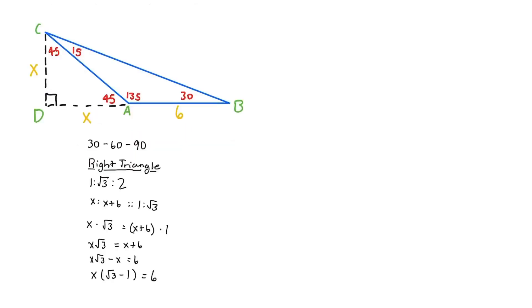We can now multiply by the conjugate of root 3 minus 1 on both sides. Now we get x times root 3 minus 1 times root 3 plus 1 is equal to 6 times root 3 plus 1. By difference of squares, we get x times 3 minus 1 is equal to 6 root 3 plus 6. This means that 2x is equal to 6 root 3 plus 6 or x is equal to 3 root 3 plus 3.